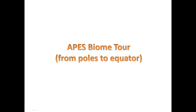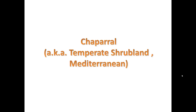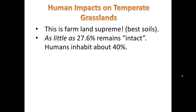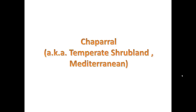Alright scholars, thanks for tuning in for the second part of our biome tour. Today we're going to pick up where we left off. The last one we did was temperate grasslands. What does the word temperate mean? It means not too cold, not too hot.